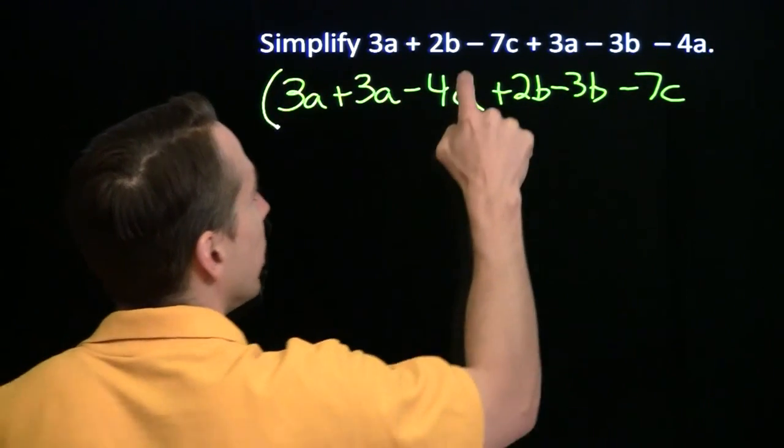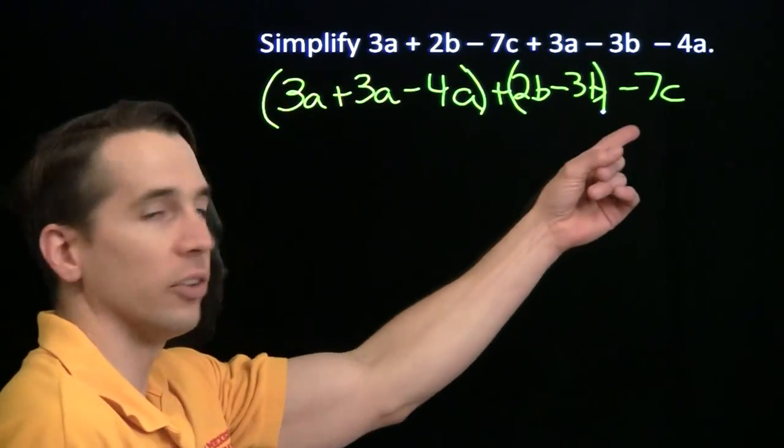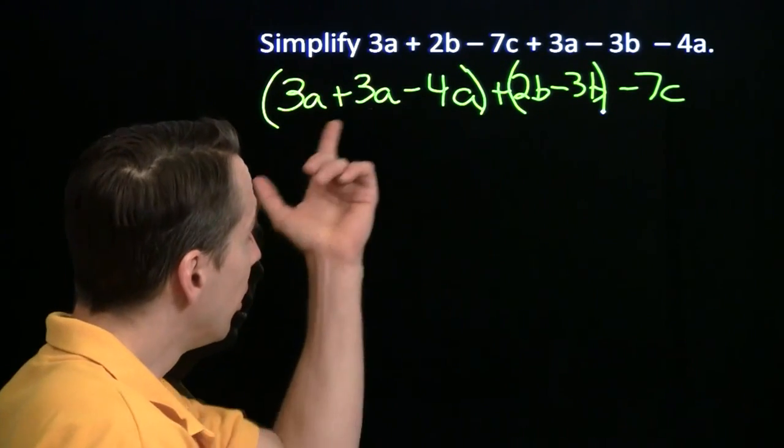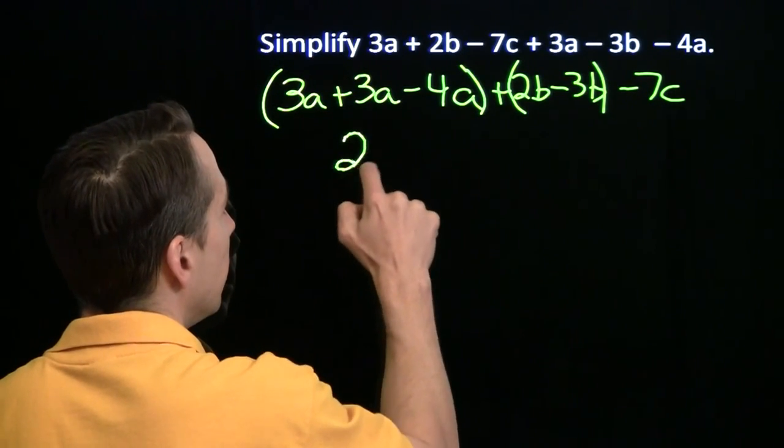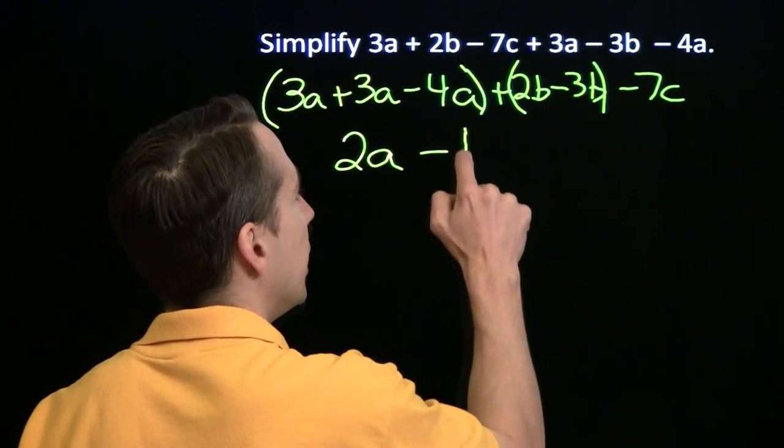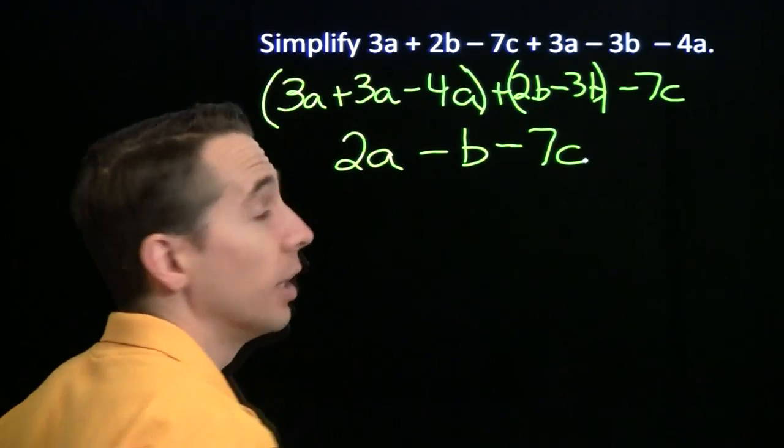I've got all the a's together. I've got the b's together. And I've got the c over here by itself. Now these we can combine. 3a plus 3a is 6a. 6a minus 4a is 2a. 2b minus 3b gives us minus b. And then, of course, we have our minus 7c out there.